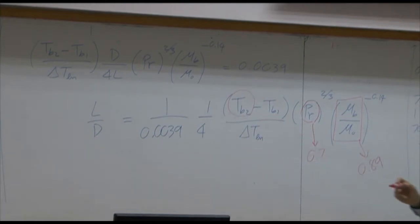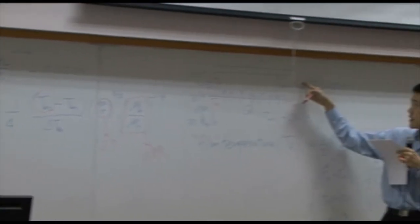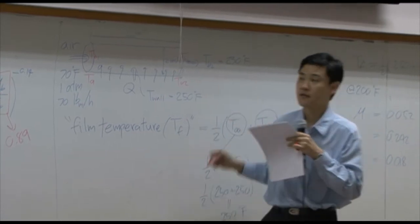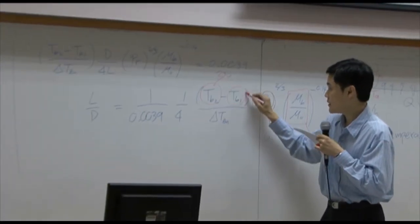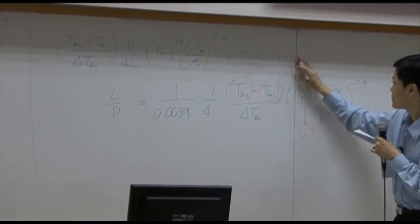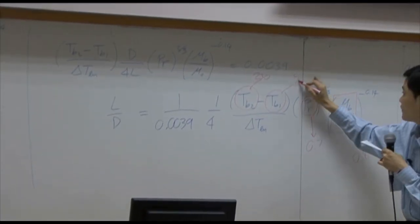What is TB2? That's bulk temperature at the outlet. So TB2 here will be 230. And TB1 is the inlet temperature of the bulk. That's 70.